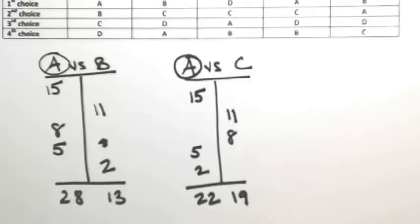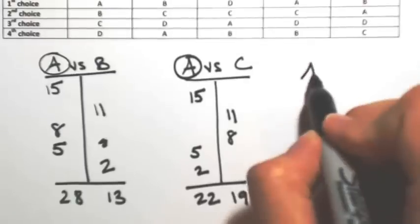So C cannot be the Condorcet winner because C has to beat all of the competitors. So I'm not looking at C anymore. So there's only one more competition that A needs to win, and that's against D.